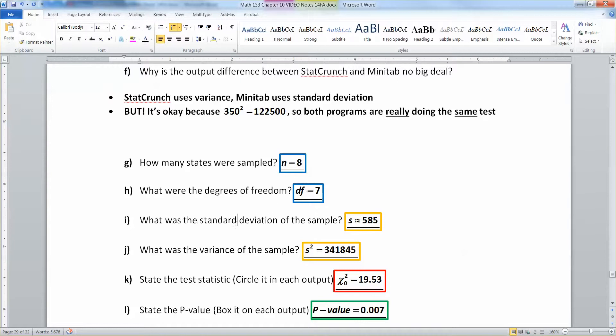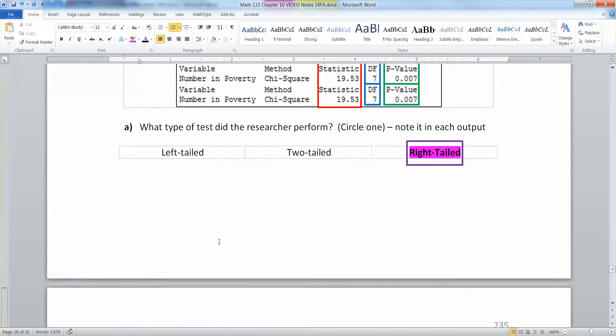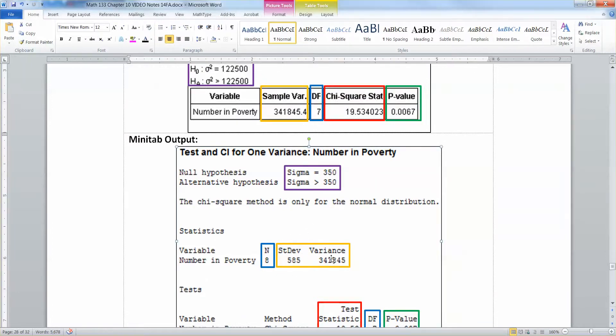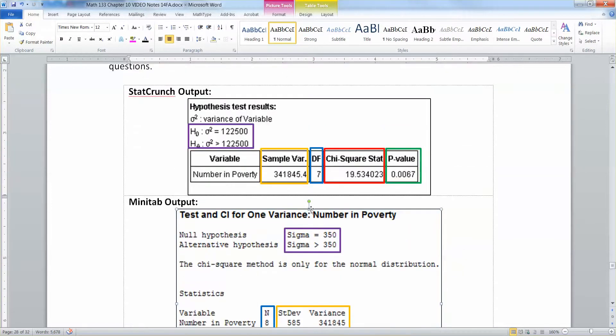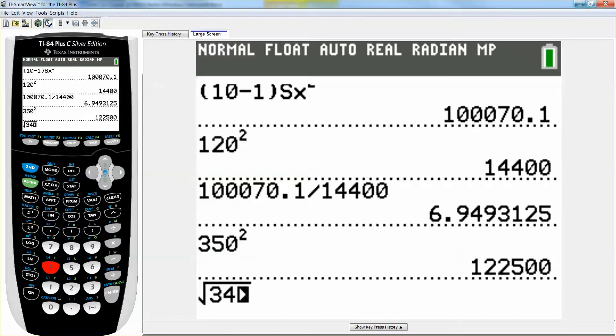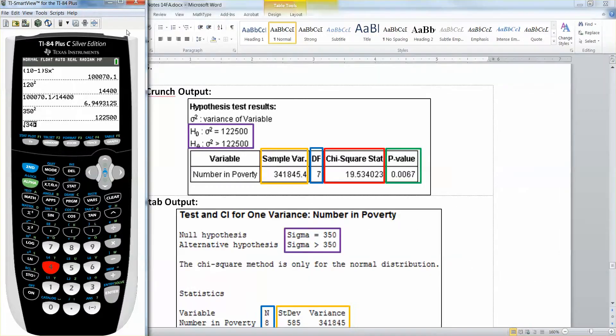Now, the sample standard deviation and the variance, you only can get that actually from the standard deviation from here, right here. Standard deviation is 585, and the variance is 341,845. Now, if you had StatCrunch, you'd have to work at it a little bit to see how they give you sample variance right there. So to find the standard deviation, you'd have to take the square root of 341,845.4. There you have it.